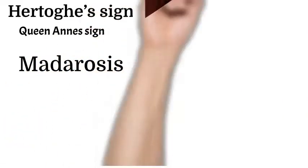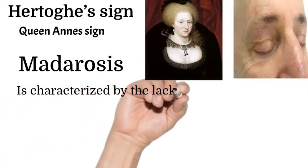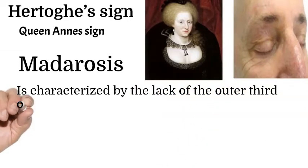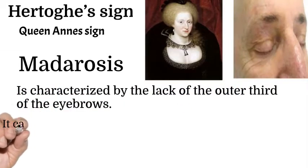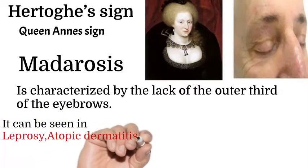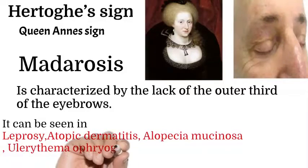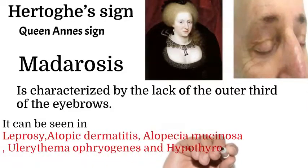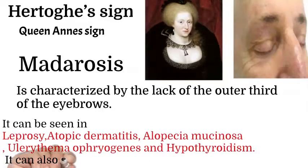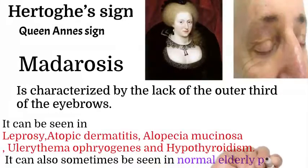Hertoghe sign, also called Queen Anne's sign or mother roses sign. This sign is characterized by the lack of the outer third of the eyebrows, as seen in this picture. This sign can be seen in leprosy, atopic dermatitis, alopecia mucinosa, allergic reactions, and hypothyroidism. It can also sometimes be seen in normal elderly patients.